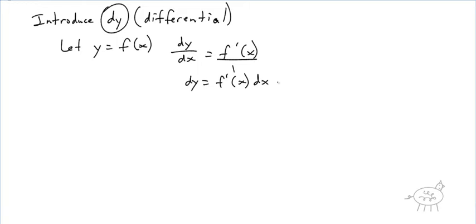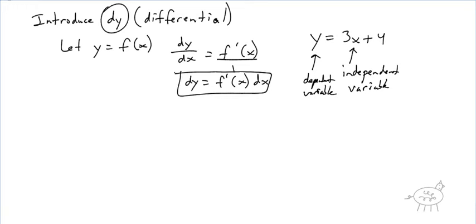All right, so a couple things here. First of all, when we talk about independent and dependent variables, if I told you, like, y equals 3x plus 4, do you guys agree x is our independent variable? And y is our dependent variable. You can pick any value you want for x, and then you plug it in, so y depends on x. So, looking at dy equals f prime of x dx, we have two variables here that are independent, x and dx, and this guy here is our dependent variable, dy.